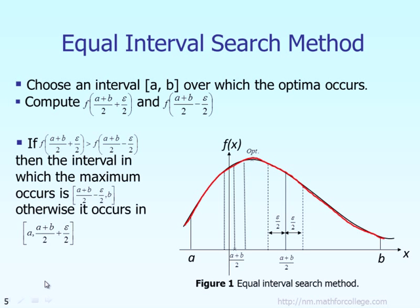Obviously when you plot it, you will see that the maximum of that function is approximately right there, which we call the optimum location. Our objective is to figure out the maximum location point of that function. In order to do that, the first step we have to do is figure out the lower bound and the upper bound of that function. In this case, we say that is point A and point B. In other words, the optimum must be located somewhere between A and B. Assuming we know the lower bound value of A and the upper bound value of B, what is the next step we can do?